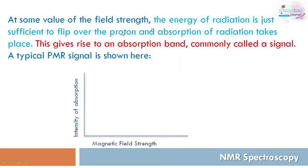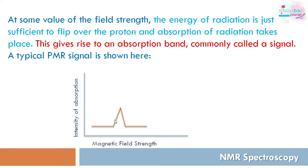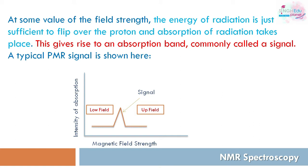At some value of field strength, the energy of radiation is just sufficient to flip the proton, and absorption takes place. This absorption band is called a signal. On the graph of magnetic field strength vs. intensity, there are two regions: a low field region where magnetic field strength is very low, and a high field region where it is very high. Signals are not obtained in either extreme region, but only in an intermediate region where the NMR signal is obtained.